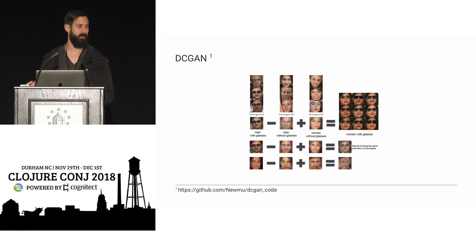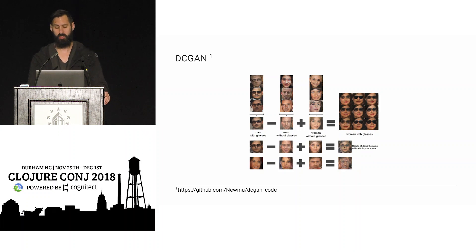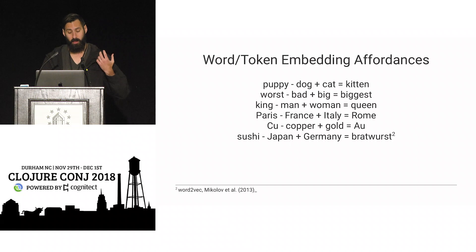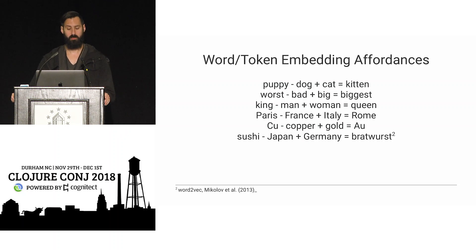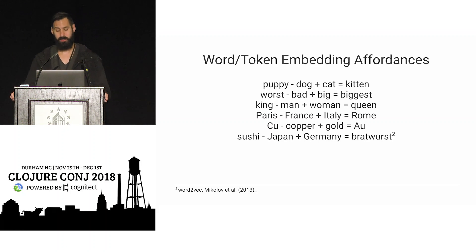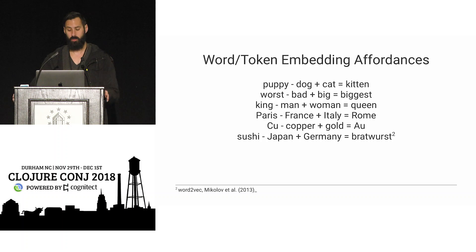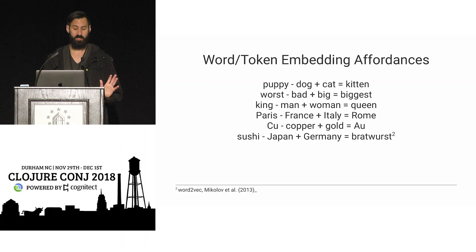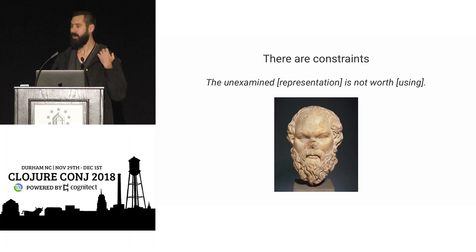With vector space models from empirical learning, you get some ability to do analogy and reasoning without having first uncovered an ontological account of the world. In the face example: take a representation with glasses, subtract the man, add a woman, and end up with a woman with glasses — approximately but pretty good compared to raw pixel arithmetic. With words: 'puppy minus dog plus cat is kitten'; 'worst minus bad plus big is biggest' — both syntactic and semantic analogies. This comes from the unsupervised training process for word2vec or GloVe.